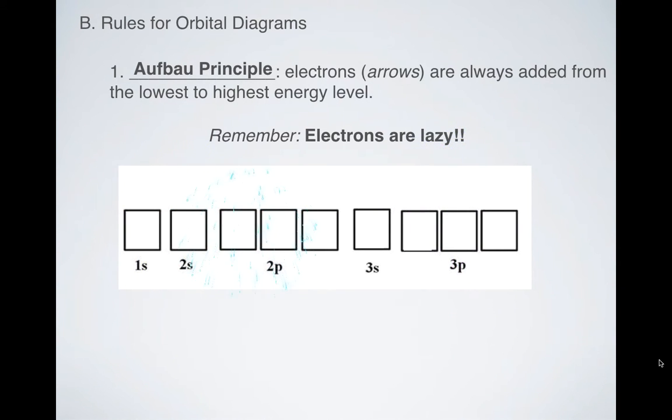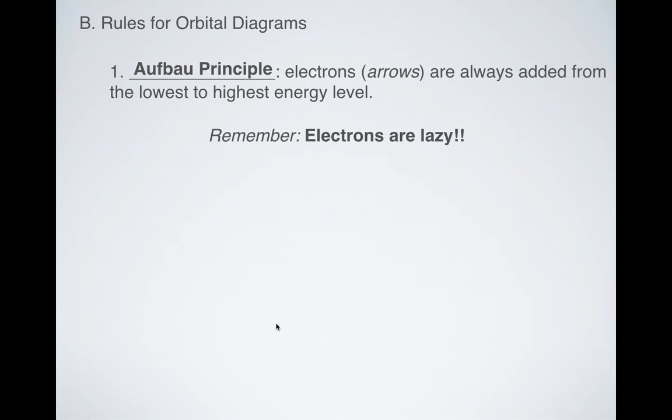So what does that mean? If we're looking at our nice little boxes, 1s is the lowest energy, 3p is the highest energy. So the electrons are going to start getting added to the 1s. Then after that's full, it'll move to the 2s, then it'll move to the 2p and it'll continue.